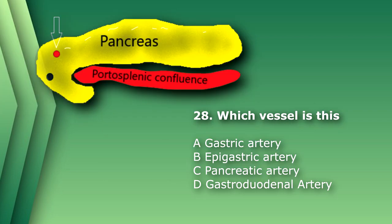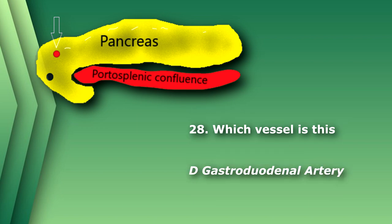Number 28. Which vessel is this? A. Gastric artery. B. Epigastric artery. C. Pancreatic artery. D. Gastroduodenal artery. The answer is D, gastroduodenal artery, which is located anterior to the head of the pancreas. The common bile duct is located posterolaterally. This is also a good view to look for stones in the common bile duct.